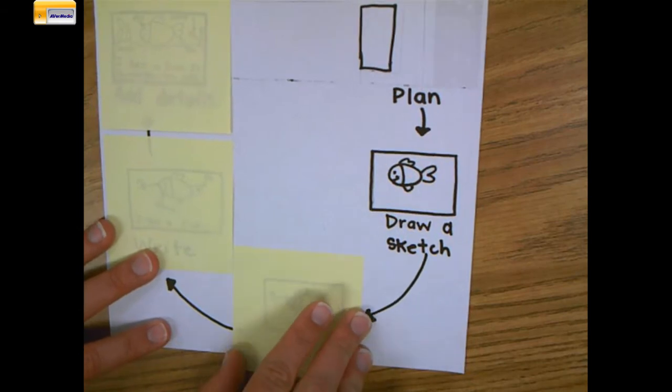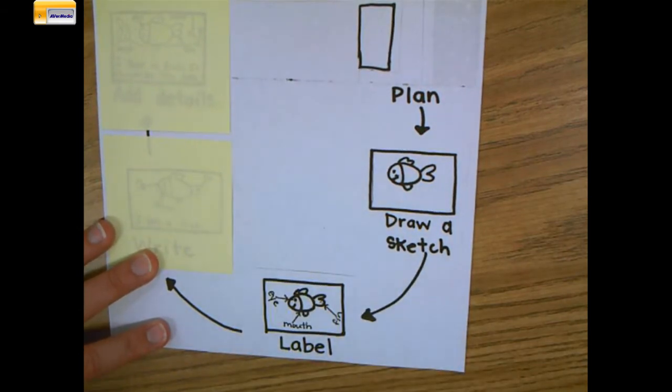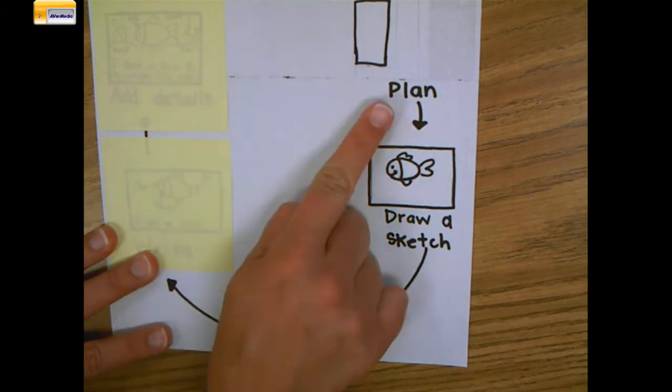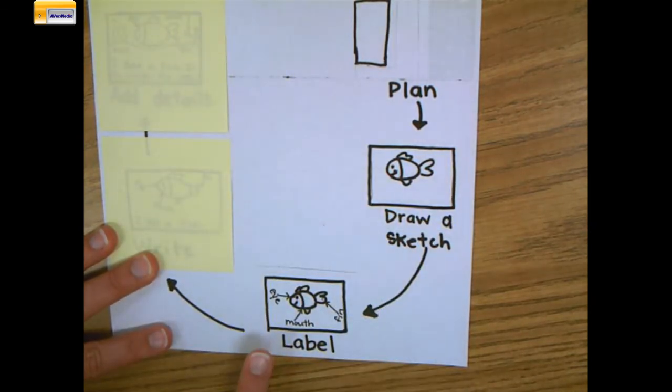Today I'm going to teach you the next step which is to add labels. Labels are words written at different parts of your picture to explain to others or people who are reading what your drawing is. So watch me as I follow the first four steps: think, plan, draw, label.